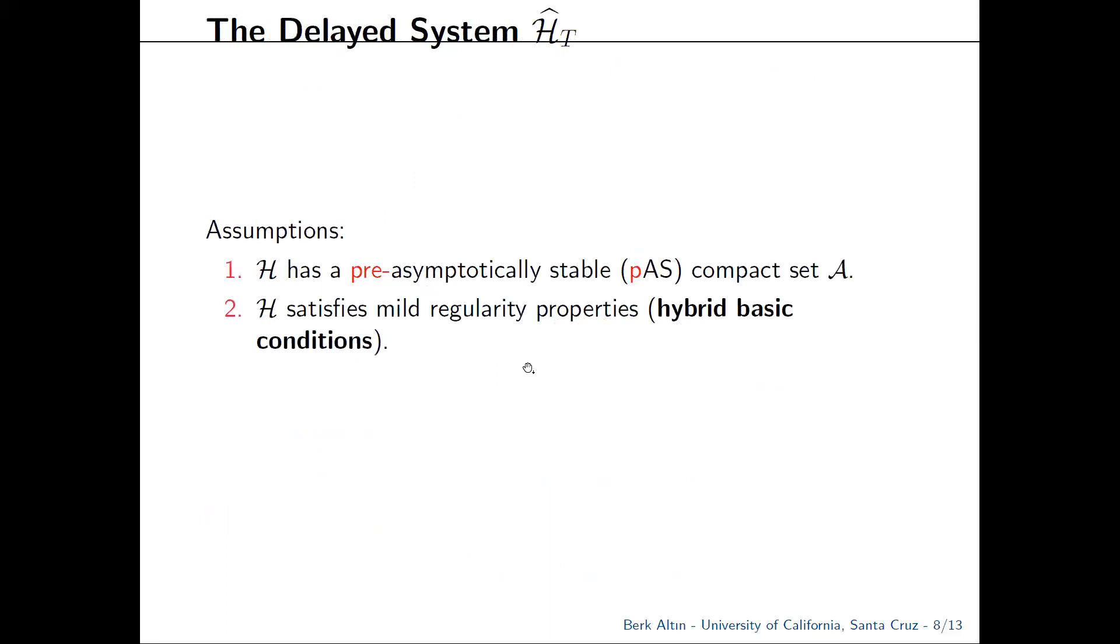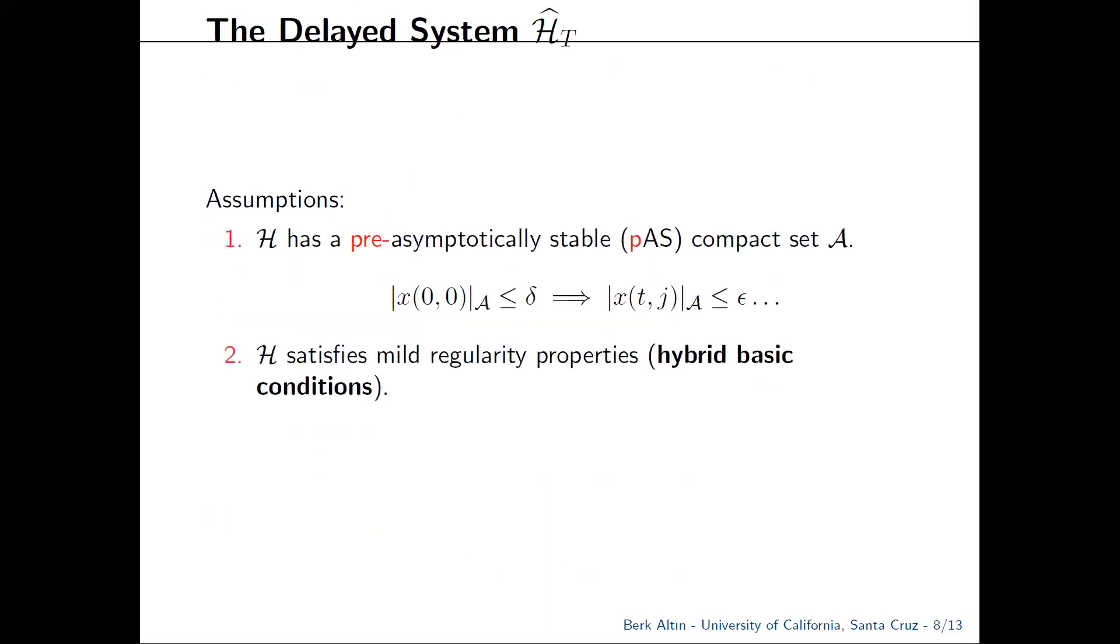We have two main assumptions. The first is that the original nominal system has a pre-asymptotically stable compact set A. The prefix pre indicates that maximal solutions need not be complete, which is in accordance with stability theory for hybrid inclusions. Otherwise, this is stability in the usual Lyapunov sense. If we start close to our set A, we should stay close, and if we start close enough, we should converge back to it.